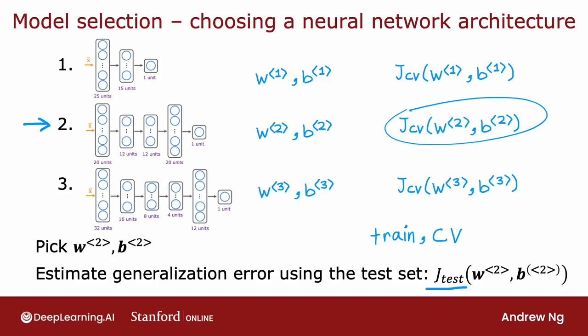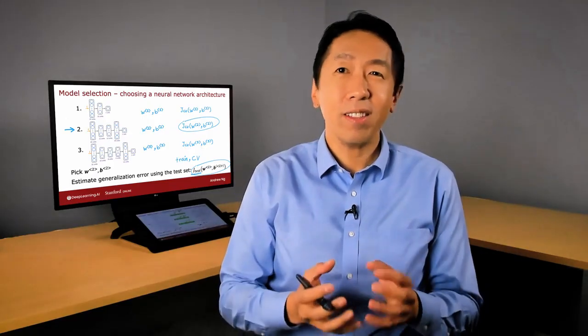Only after you've come up with one final model should you then evaluate it on the test set. Because you haven't made any decisions using the test set, that ensures your test set gives a fair and not overly optimistic estimate of how well your model will generalize to new data. So that's model selection, and this is a very widely used procedure.